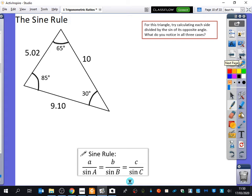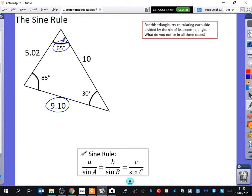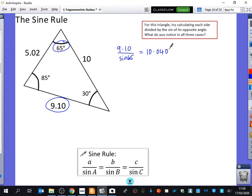Now, the sine rule, for this triangle that we've got here, we're going to try calculating each side divided by the sine of its opposite angle and we'll see what we get. So, I'm going to look at, first of all, this side here, that's its opposite angle. So, I'm going to do the side divided by the sine of 65. Now, when I do 9.1 divided by sine 65, I get 10.0407.